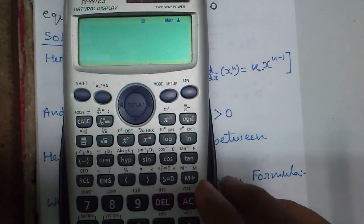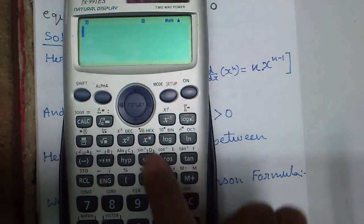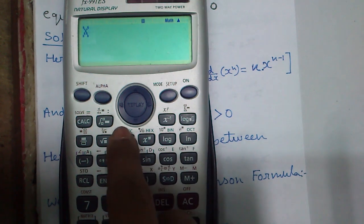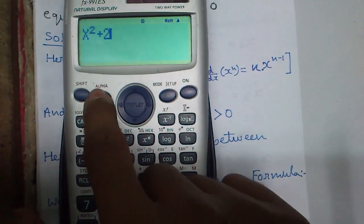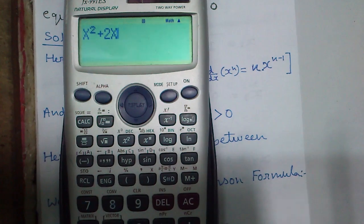For that you have to program your calculator using alpha and write parenthesis x square plus 2x minus 2.